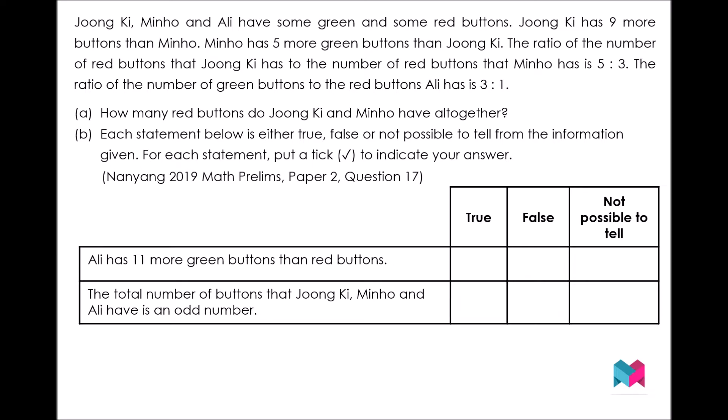The ratio of the number of green buttons to the red buttons Ali has is 3 to 1. Part A: how many red buttons do Jungki and Minho have altogether? Part B: each statement below is either true, false, or not possible to tell from the information given.